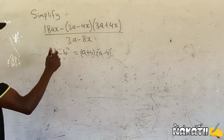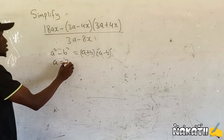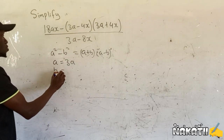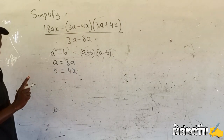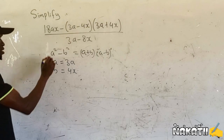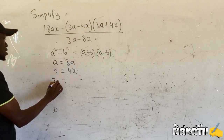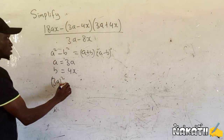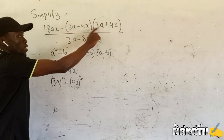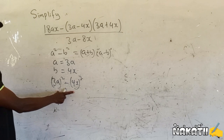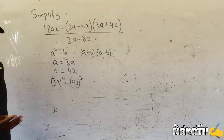The same is going to happen here. In our case, our a will be equal to 3a, and our b will be equal to 4x. Knowing that, we're going to say now that this one is going to give us 3a squared minus 4x squared. When you expand this one, you're supposed to get this one here, and that is the easiest and shortest way to do it.